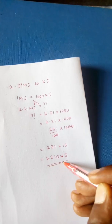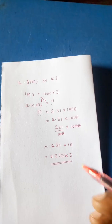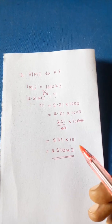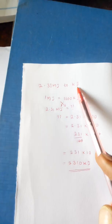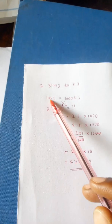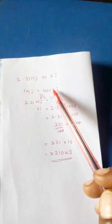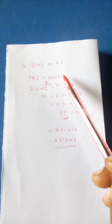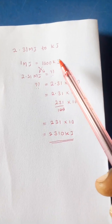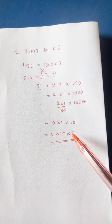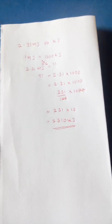And 10 times this is the same as 2310 kilojoules, and that one becomes our answer. So if you convert from megajoules to kilojoules, this is how you do it. 1 megajoule is equal to 1000 kilojoules, so you get the amount that you've been given and then multiply it by 1000 kilojoules.